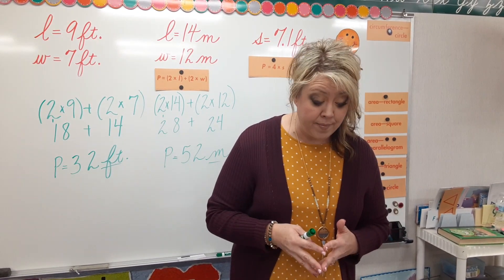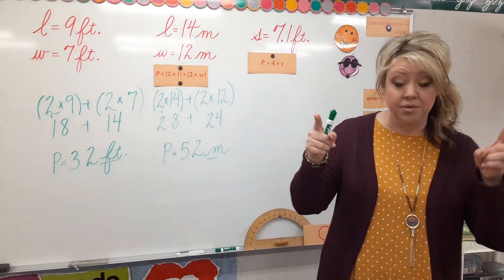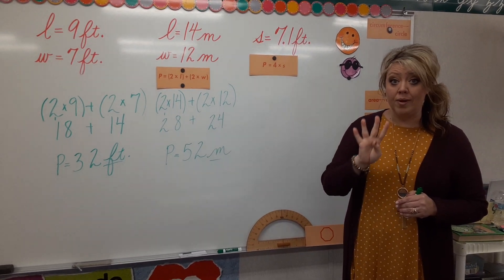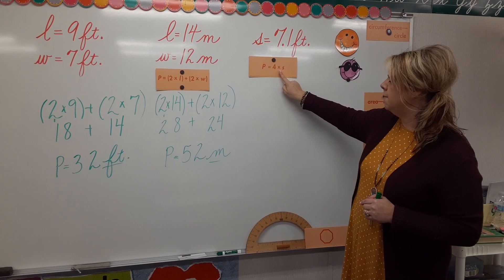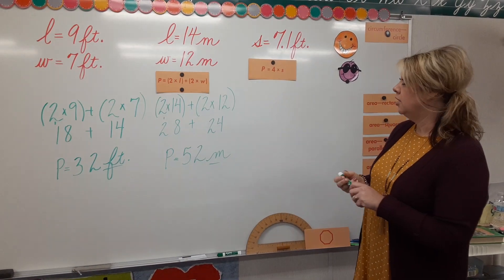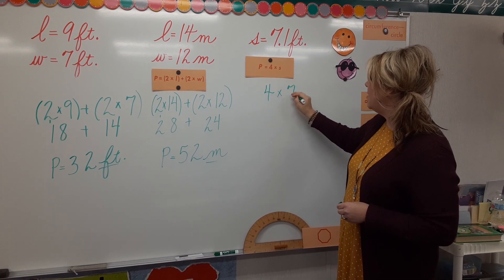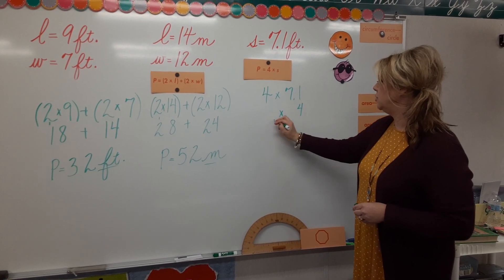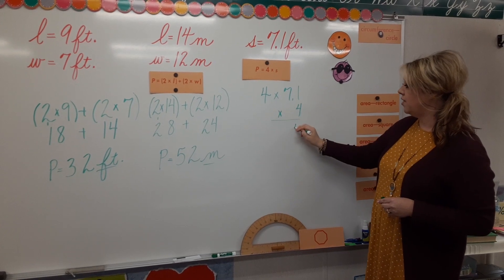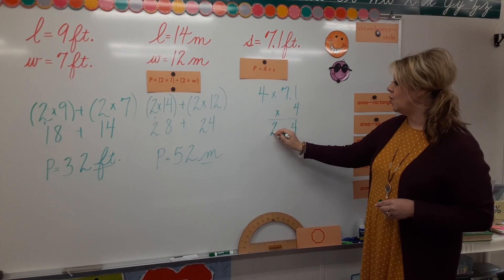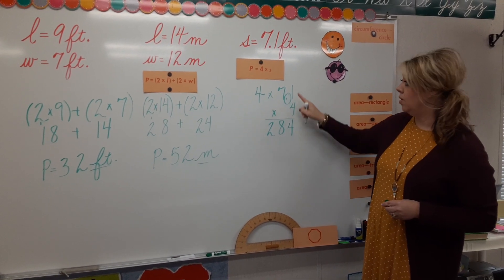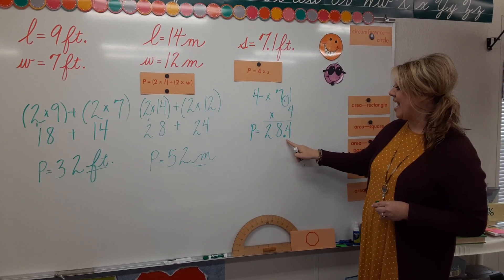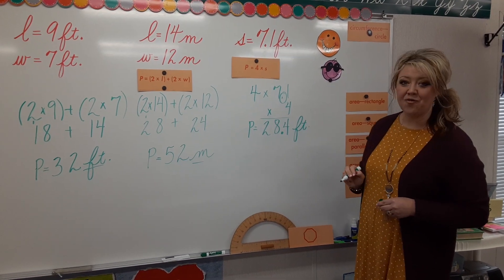Let's jump ahead to today's lesson, which is perimeter of a square — again, the distance around a polygon. We're using a different formula because it's a different shape. A square has four congruent sides, so we simply multiply 4 times S. S stands for side. So we're going to say 4 times 7.1. I'll switch it to a vertical multiplication problem: 7 times 4 is 28. Do not forget that decimal — count over one spot in your product. Our perimeter equals 28.4 feet.